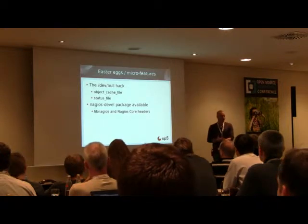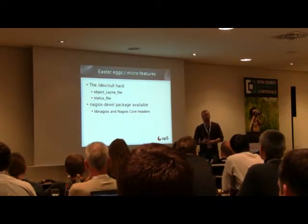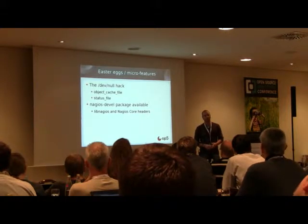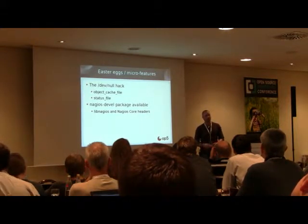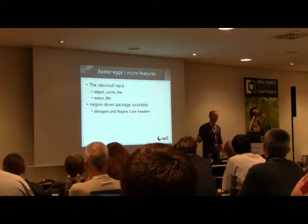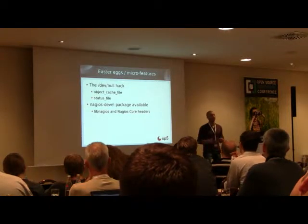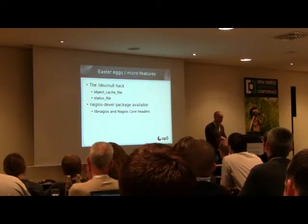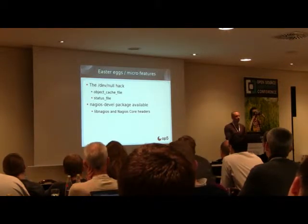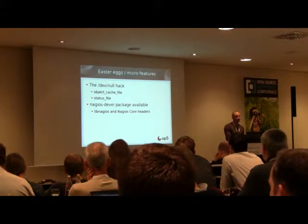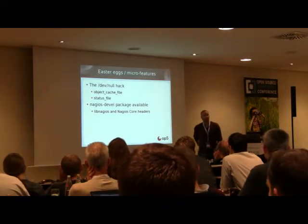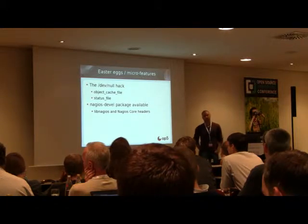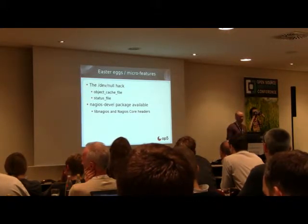Easter eggs and micro features: the dev/null hack — if you set the object cache file or status file to /dev/null, Nagios will just return immediately when it tries to write them, without iterating through all your objects and dumping them. This is useful if you're using livestatus to get current status. There's also a Nagios develop package available — LibNagios and the Nagios core headers — which is very handy for those writing event broker modules; you can now just say 'install this package' instead of carrying the headers around.